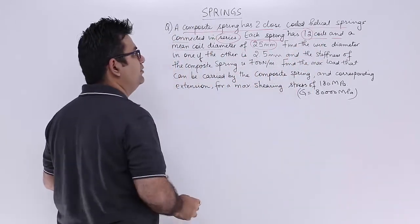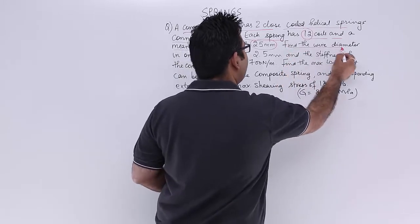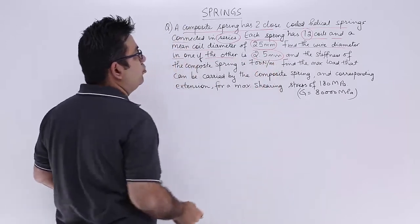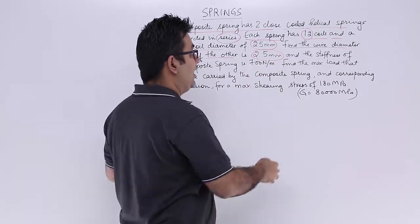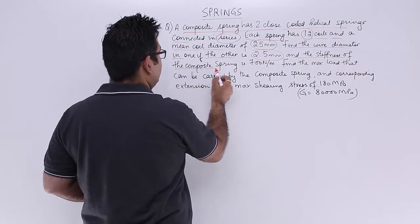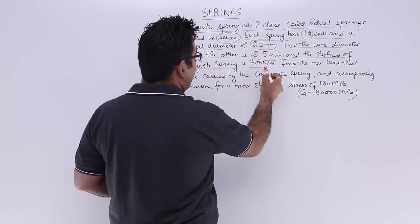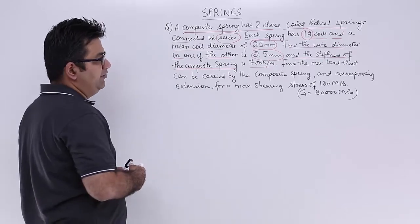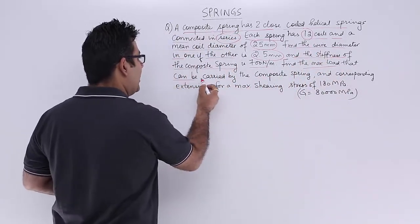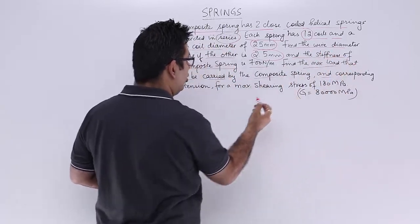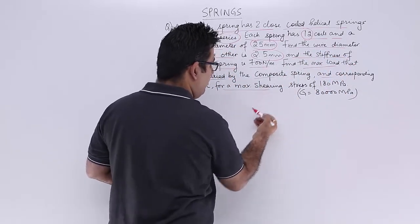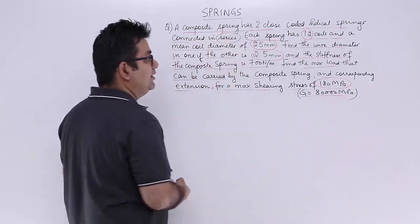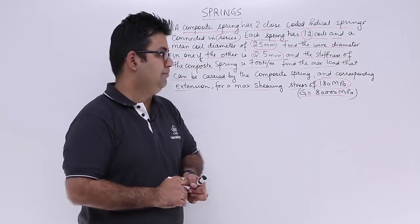I am circling the data which is important. Find the wire diameter in one if the other has a diameter of 2.5 mm and the stiffness of the composite spring is 700 Newton per meter. And we need to find the maximum load that can be carried by the composite spring and corresponding extension from a maximum shear stress of 180 MPa and the shear modulus is 80,000 MPa.